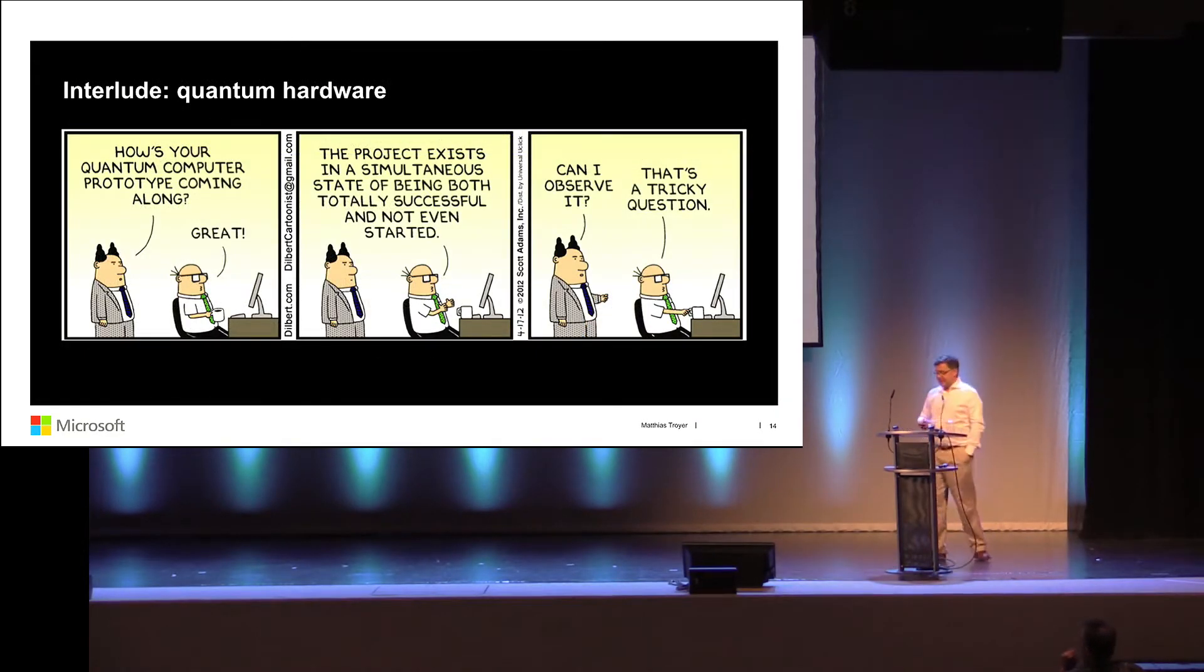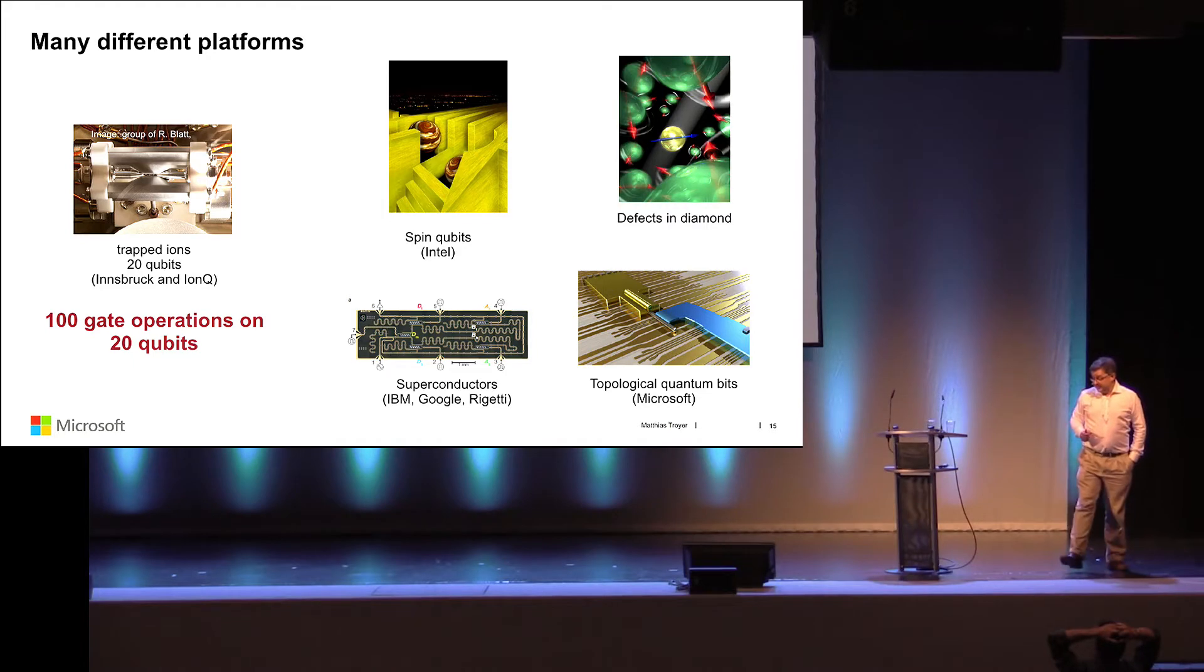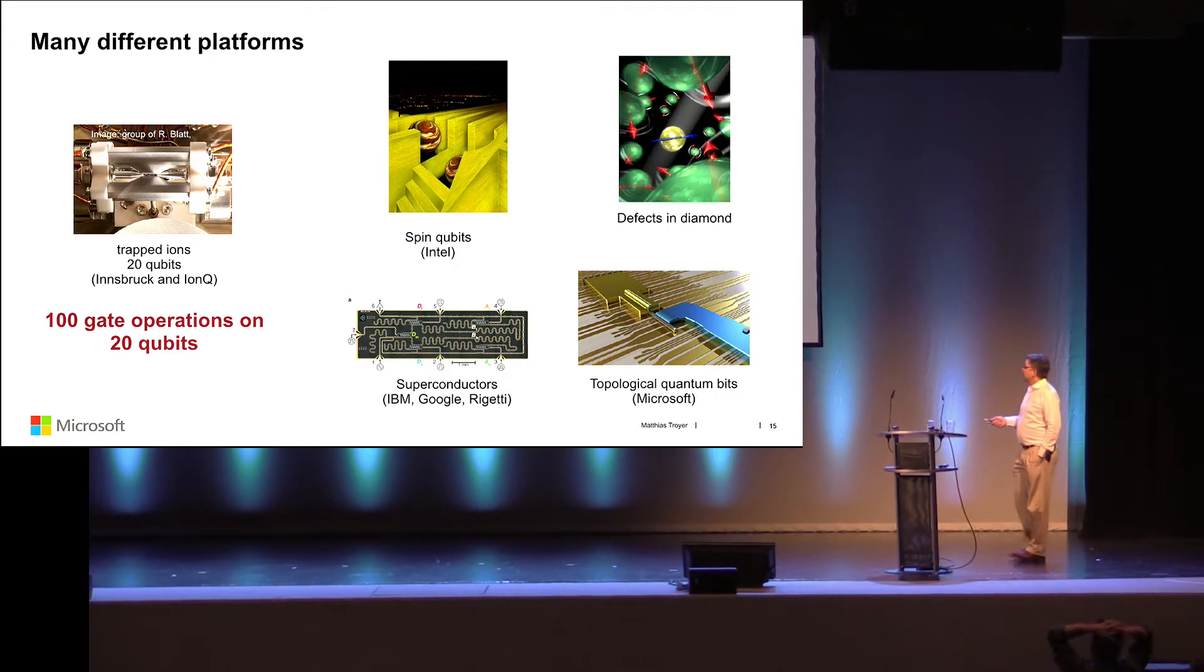Where do we stand with quantum hardware? That is very well described by Dilbert. It exists in a simultaneous state of being successful and not even started yet. But to be serious, yes, we have qubits. The record is 20 quantum bits in the ion traps in Innsbruck, Austria. That's also a technology used by a startup in Maryland, IonQ.